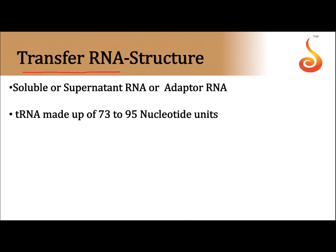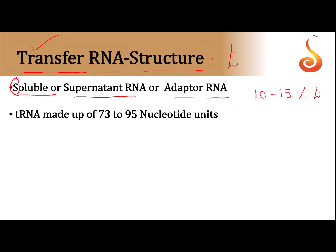Transfer RNA, otherwise called tRNA, soluble RNA (sRNA), supernate RNA, or adapter RNA — these are the other names for transfer RNA. Most of the cell's RNA, about 10 to 15 percentage, is tRNA.